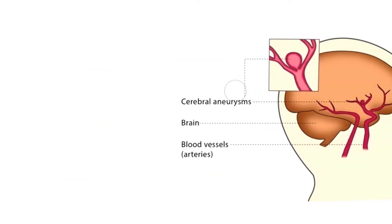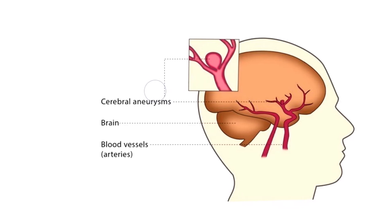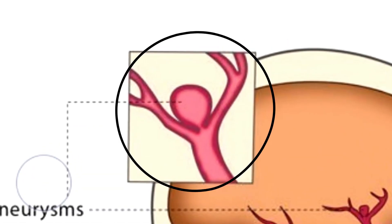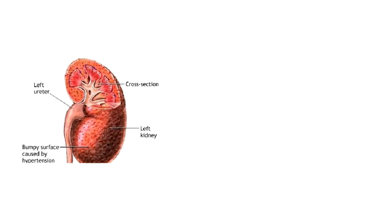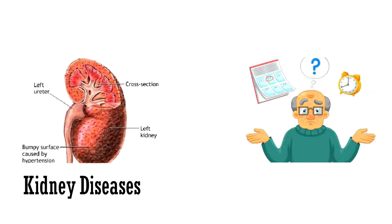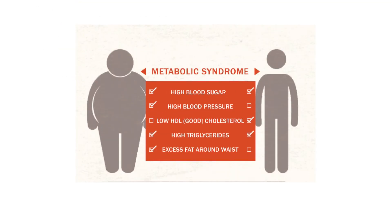Another condition is aneurysm. Aneurysms are bulging or ballooning of an artery due to weak walls. There are various other complications of hypertension like kidney diseases, dementia, and metabolic syndrome.